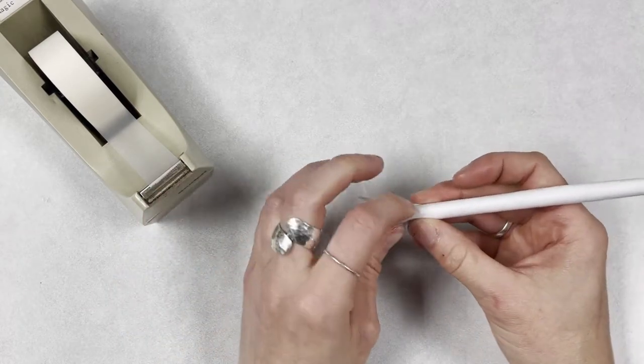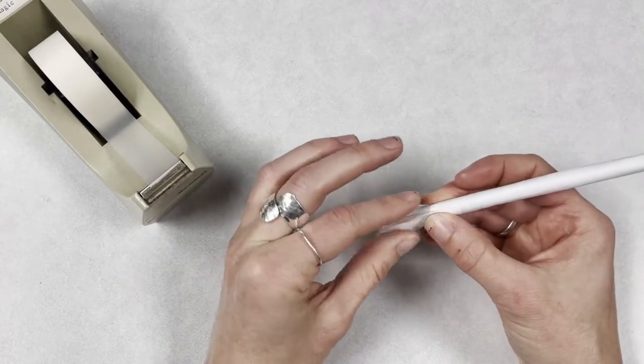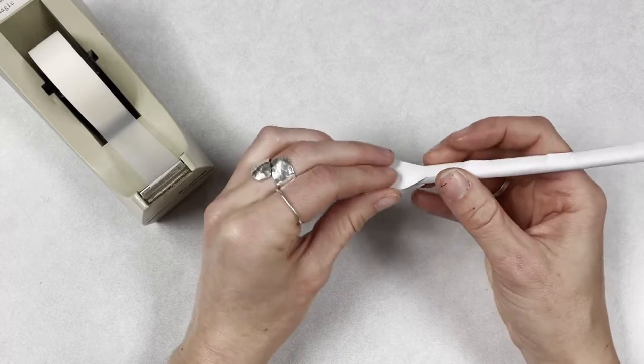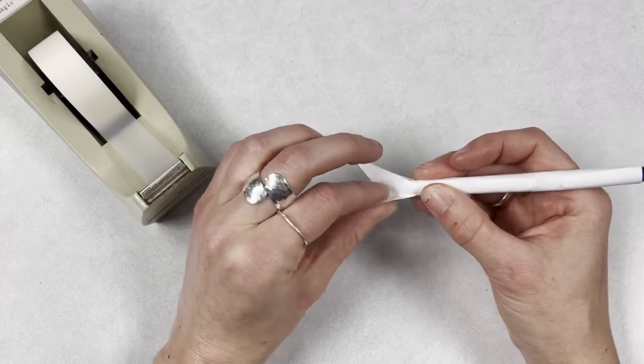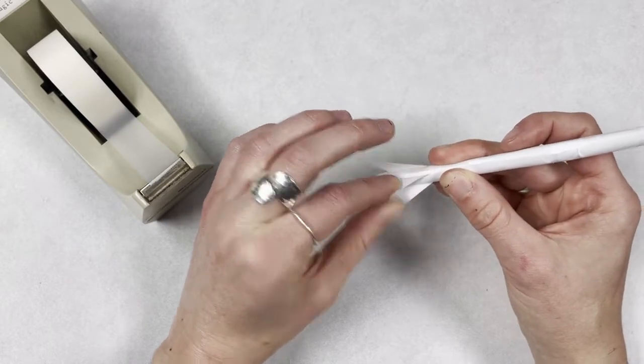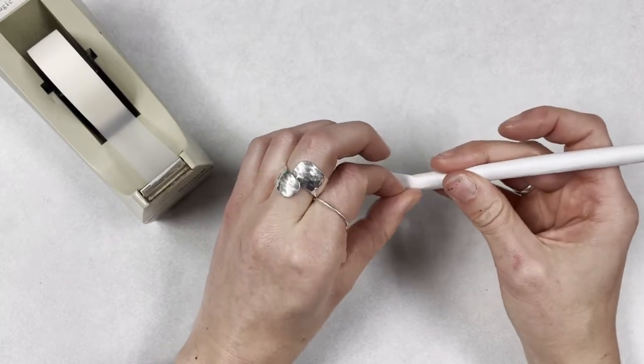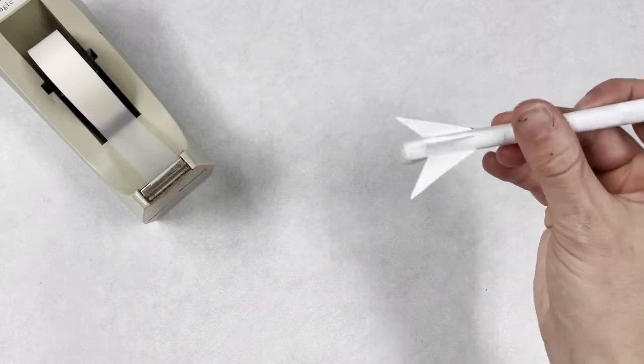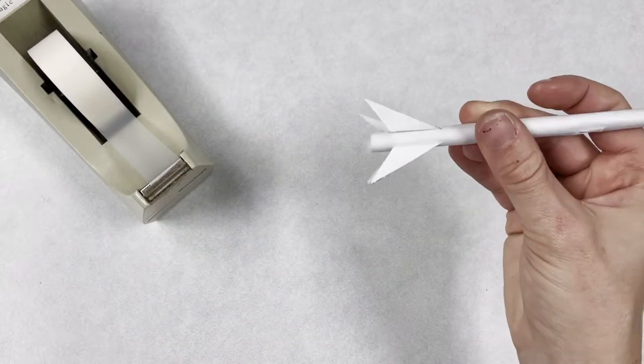And now you can bend these fins out at an angle so that they stand out from the sides of the pencil. And it should look something like this.